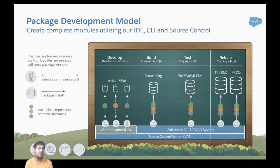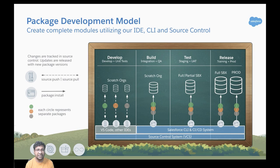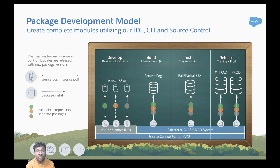The package development model is a source-driven development model where code and configuration can be logically grouped into packages and released. It can be tracked in source control, updates released with new package versions, and it supports scratch orgs. Most importantly, it allows you to create self-contained applications or libraries deployed to your org as a single package.